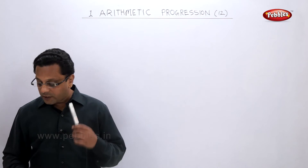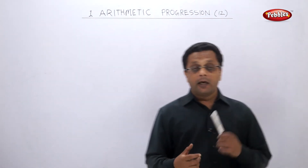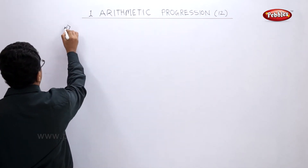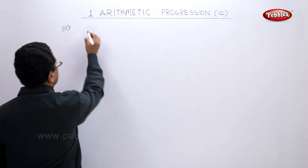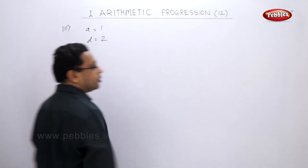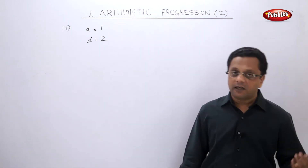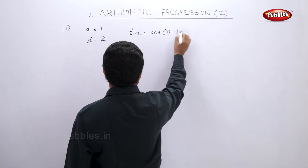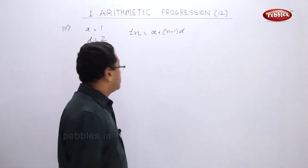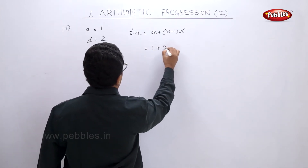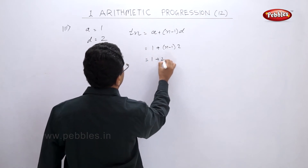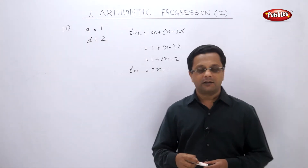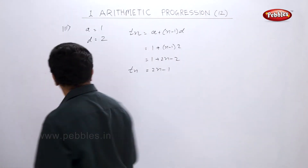Show that the nth odd natural number is 2n − 1. The AP of odd numbers is 1, 3, 5, 7, 9... so the first term a = 1 and common difference d = 2. Therefore tn = 1 + (n−1)×2 = 1 + 2n − 2 = 2n − 1. So tn = 2n − 1. Very easy!